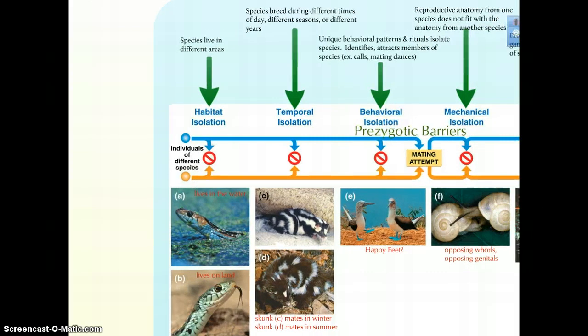Temporal isolation is also possible. While populations may have overlapping territory, if they reproduce at different times, then gene flow is slowed or effectively stopped.